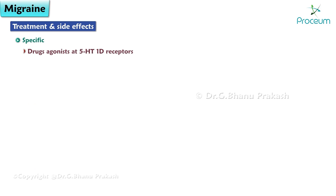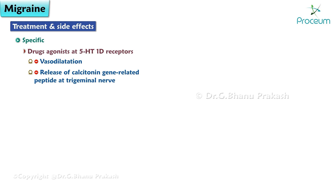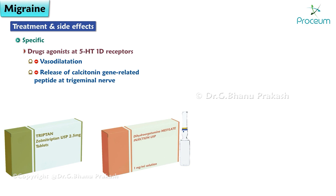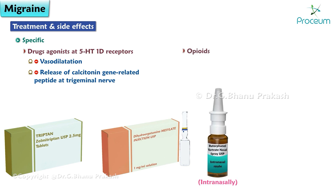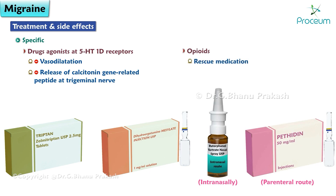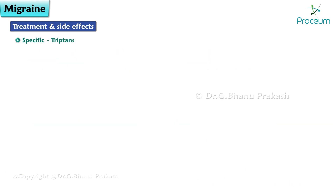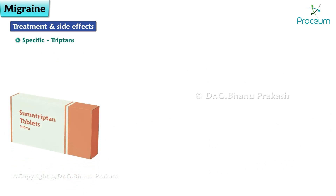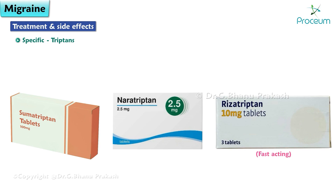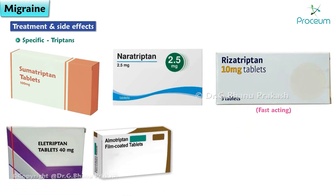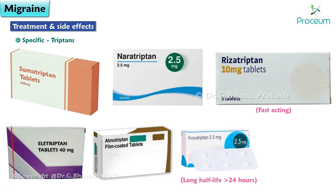Migraine-specific treatment includes drugs that are agonists at 5-hydroxytryptamine 1D receptors. They inhibit vasodilation and release of inflammatory mediators like calcitonin gene-related peptide at the trigeminal nerve in cranial vessels. These include triptans and dihydroergotamine. Opioids — butorphanol by intranasal route or pethidine by parenteral route — are rescue medications used when other drugs do not achieve the desired response.